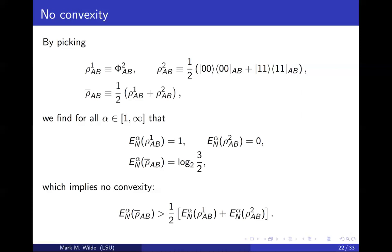The max logarithmic negativity has an operational meaning but is not convex. We can understand this as: convexity is not really essential for an entanglement measure. We can understand that from Plenio's work, but the difference is that the max logarithmic negativity has an operational meaning — and that really tells you that indeed it's not necessary for entanglement to be convex and still have a meaning.